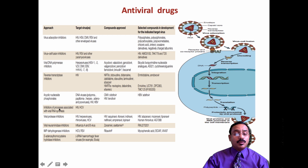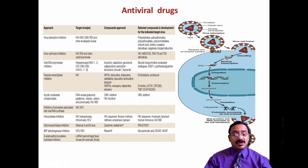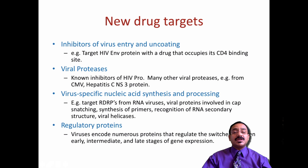The viral neuraminidase inhibitor is important for avian and human influenza. There are also IMP dehydrogenase inhibitors and S-adenosyl homocysteine hydrolase inhibitors — these are enzymes used by certain viruses. We will see them in elaborate fashion.